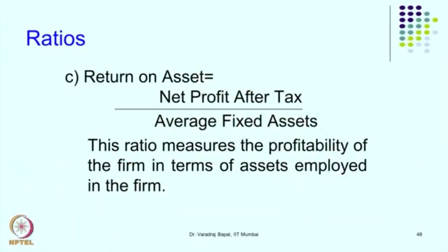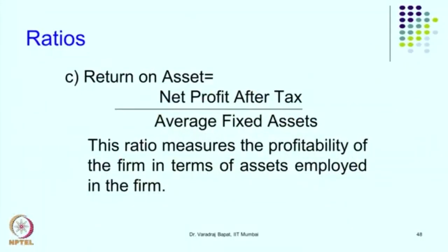The next ratio in the return ratios category is Return on Assets (ROA). Here we take a particular asset in the denominator and find out the profit generated by that asset: net profit after tax divided by average fixed assets. Using average figures is better than year-end figures since profit is calculated for the whole year. Instead of fixed assets, you can also use average total assets to calculate return on total assets.